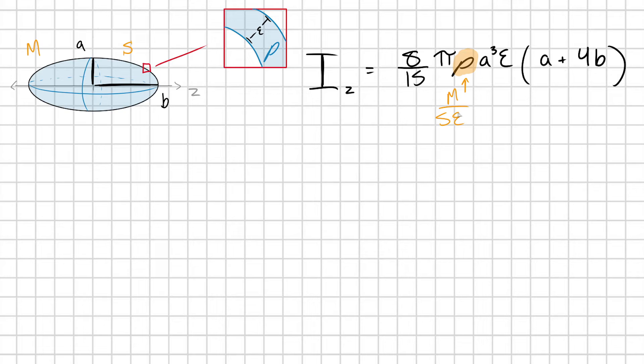If this spheroid shell has mass M, we can write mass density as M over S times epsilon. Taking the surface area times the thickness epsilon gives us the total volume of our spheroid shell. The epsilons cancel.